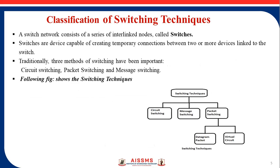A switched network consists of a series of interlinked nodes which we call switches. Switches are devices capable of creating temporary connections between two or more devices linked to the switch. Traditionally, three methods of switching have been important, as shown in the diagram: circuit switching, message switching, and packet switching. Packet switching has two services: datagram packet and virtual circuit. Here, we are discussing circuit switching.